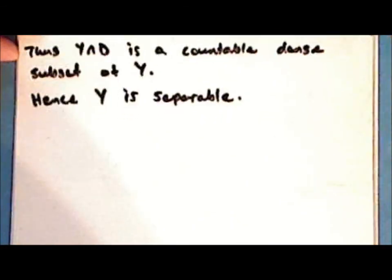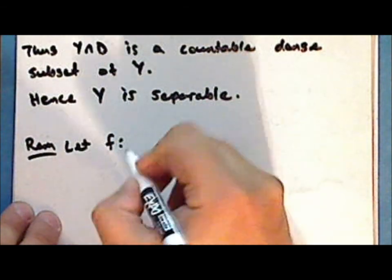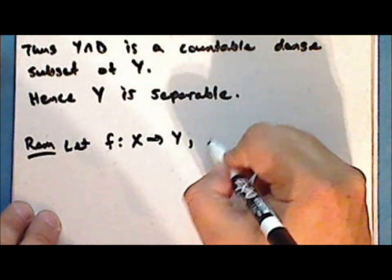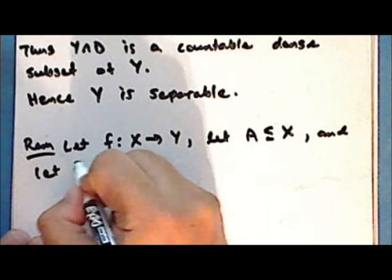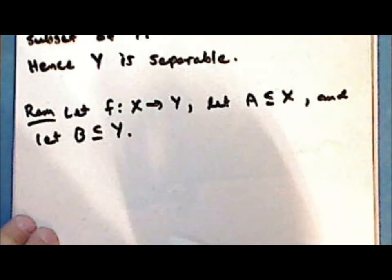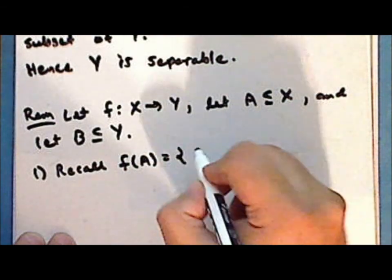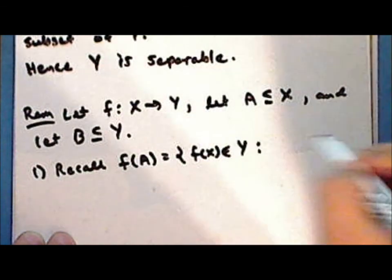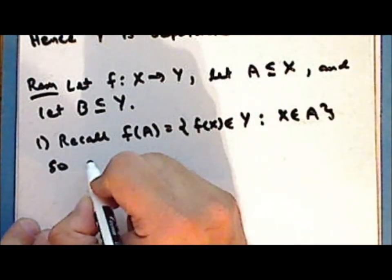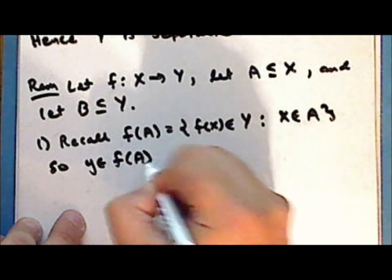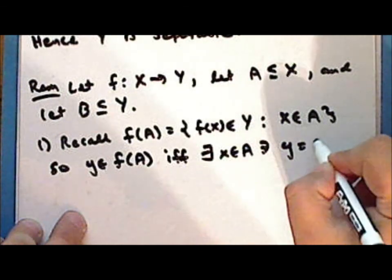We'll shift gears for a moment and consider functions. Let f be a function from X into Y, let the set A be a subset of the domain X, and let B be a subset of the codomain Y. Recall that the direct image of the set A is the set of all elements f(x) in the codomain Y such that x is an element in the set A. So a point y is in the direct image of A if and only if there exists an element x in the set A such that y equals f(x).